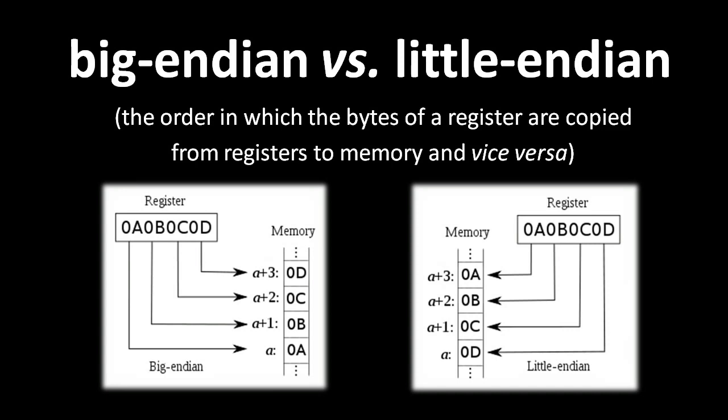As a binary number, 0a is the most significant byte. The question is: when we copy the register contents to some address n in memory, do we copy the most significant byte 0a to n, 0b to n+1, 0c to n+2, and 0d to n+3, or do we copy in the opposite order — copying the least significant byte 0d to n, 0c to n+1, 0b to n+2, and 0a to n+3? A CPU that starts with the most significant byte uses the big Endian scheme, and a CPU that starts with the least significant byte uses the little Endian scheme.